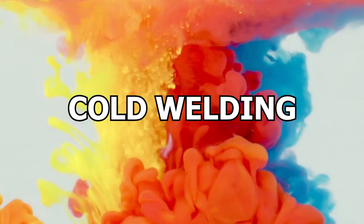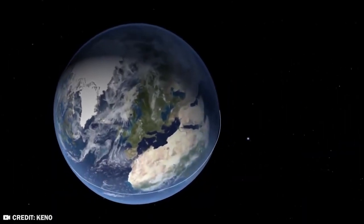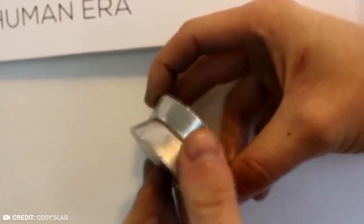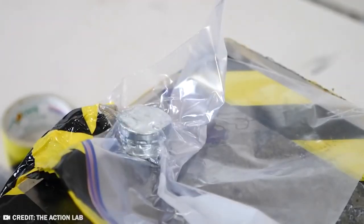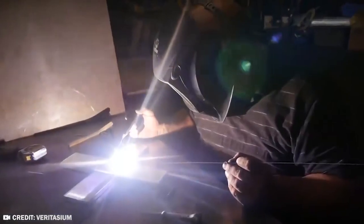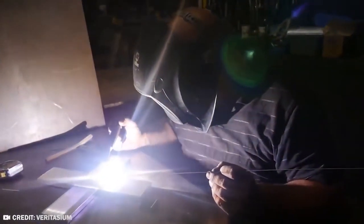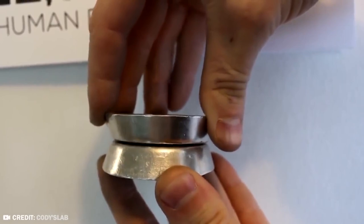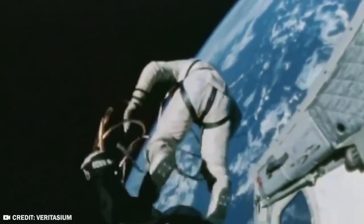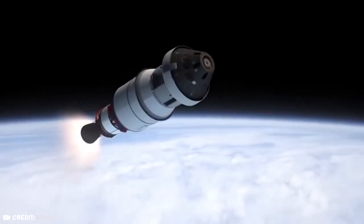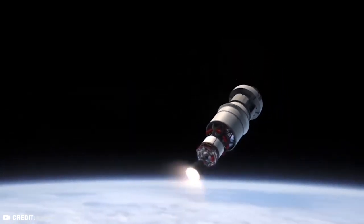Number 13: Cold Welding. On Earth, there are certain ways we do things. We are, after all, a species of habit, and we like to just keep things the same. When it comes to science, it's not even a choice. Physics and chemistry are unchanging constants, but that doesn't mean space works in the same way. In fact, it almost certainly doesn't.